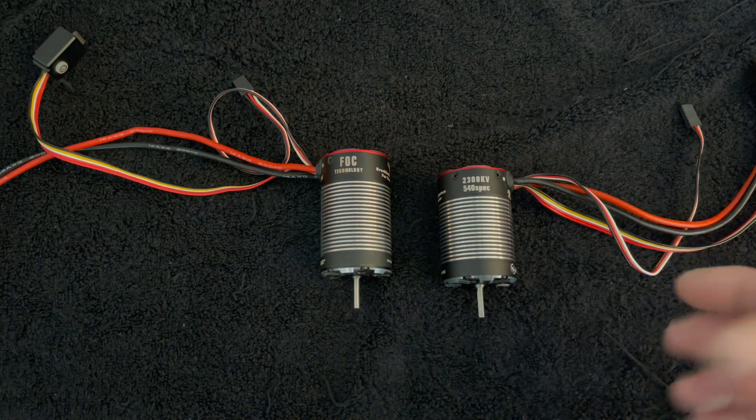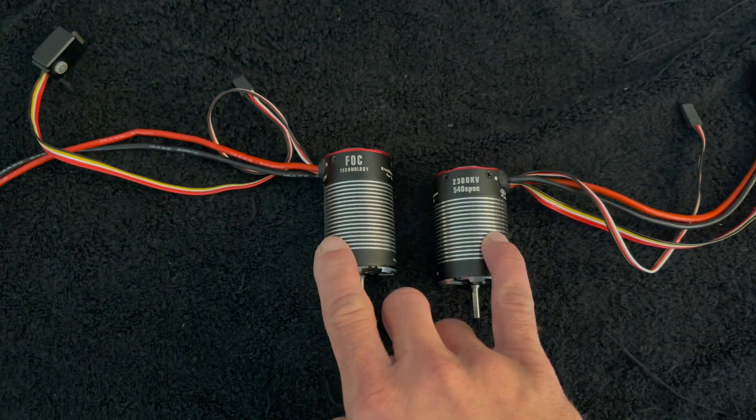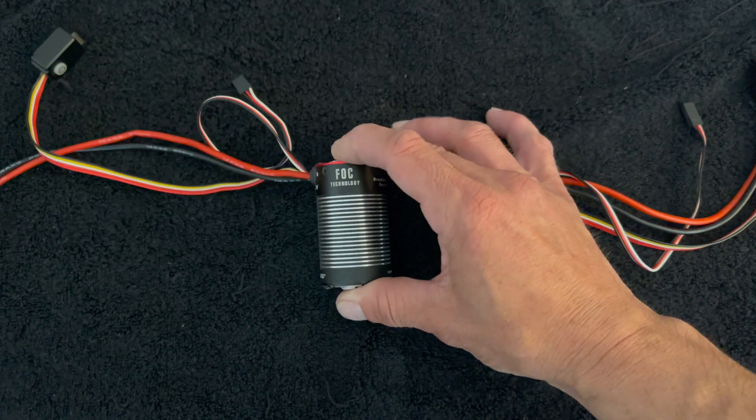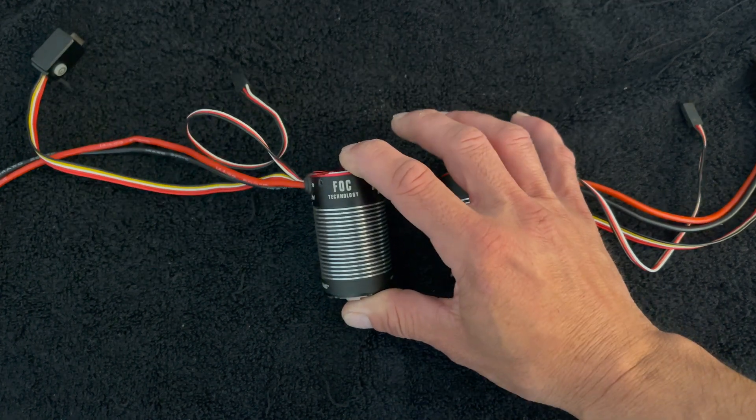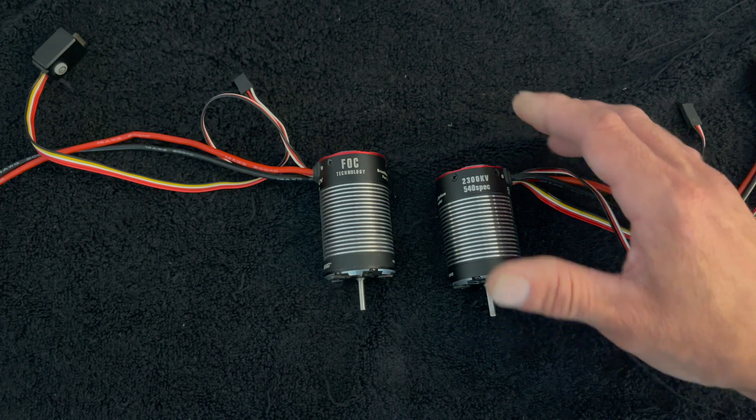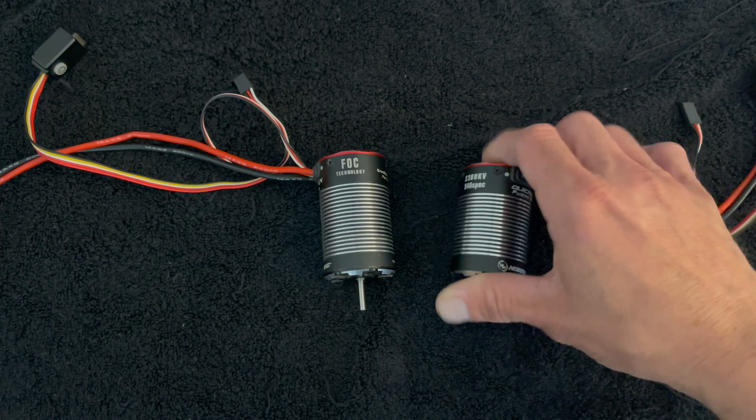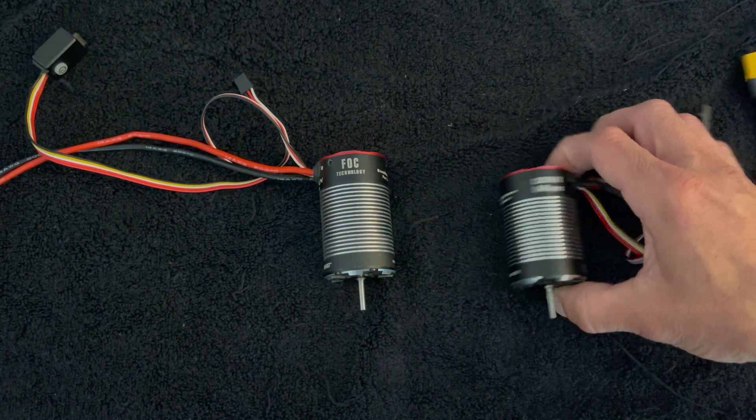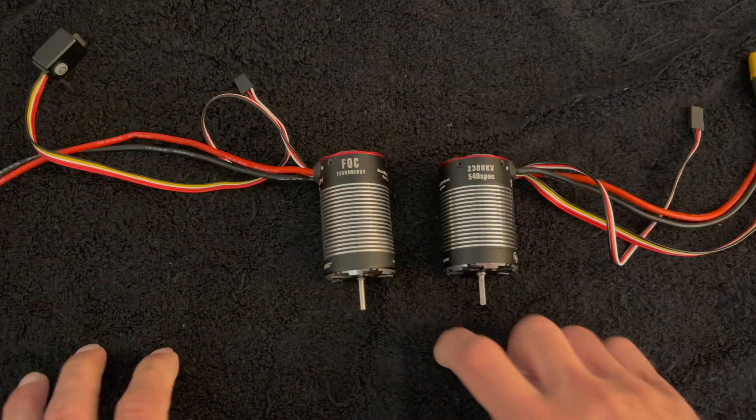More on the hard spec differences. There is also a little bit of rating change in the speed control that's built in. The original Fusion speed control is a 40/160 rated. The new Fusion speed control, or Fusion Pro rather, is a 60/200 amp rated speed control. The BECs are also rated